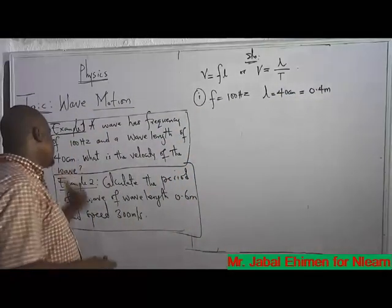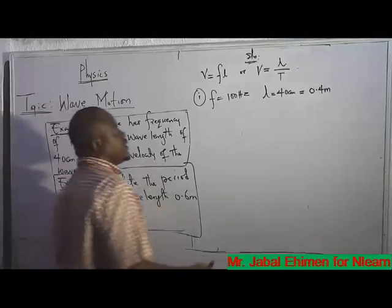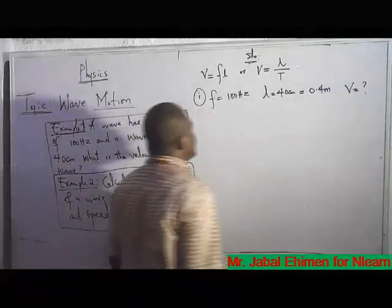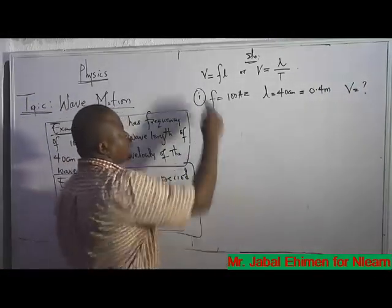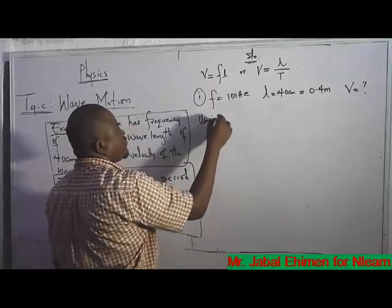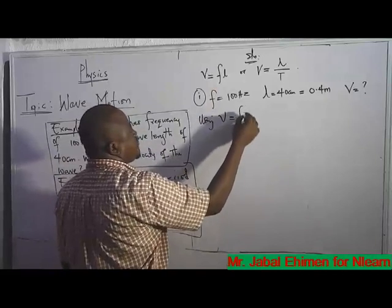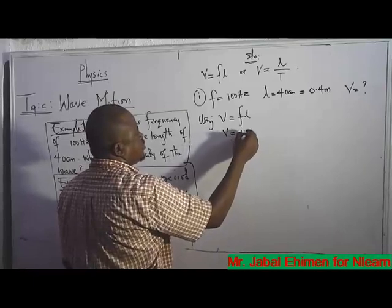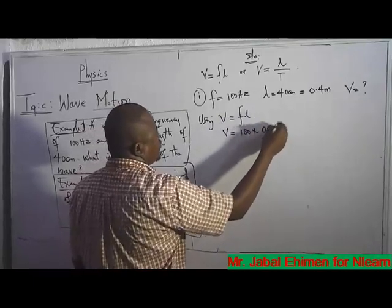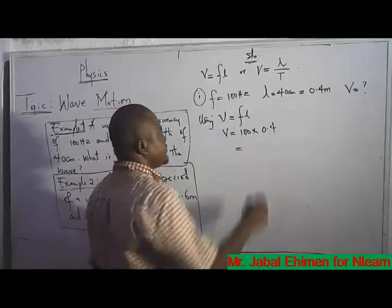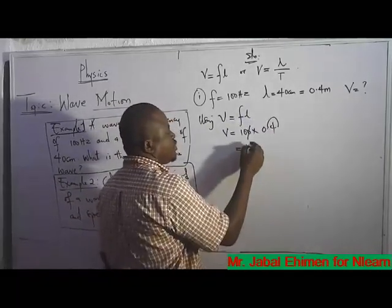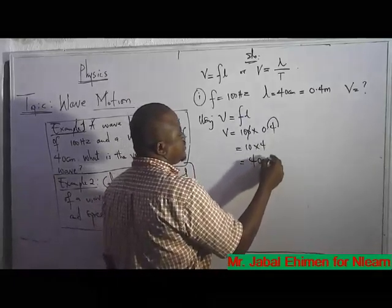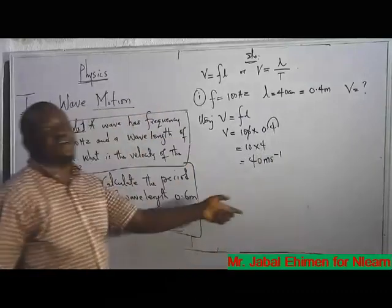The question asks: what is the velocity of the wave? We are looking for velocity — that's unknown. We'll use V equals F times lambda. So V equals 100 times 0.4. The first zero cancels, giving us 10 times 4, which equals 40 meters per second. That is the velocity.